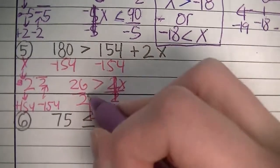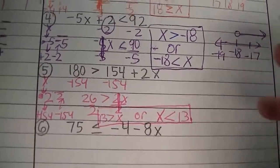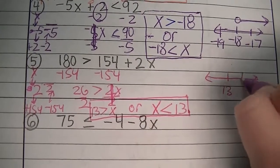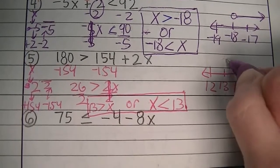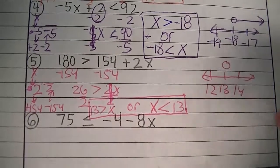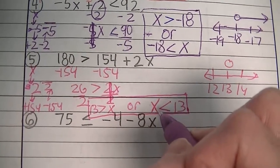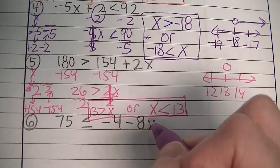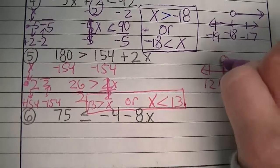Put a rectangle around your answer so you can find it when you study. Now for the number line — make sure 13 is on there. It's going to be an open circle because 13 is not one of the possible answers. X is smaller than 13, so numbers that x could be — like 11, 12, 10, 9, negative 2, negative 1 half — are all to the left.